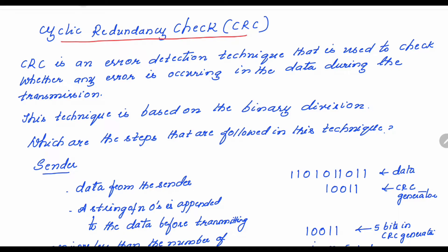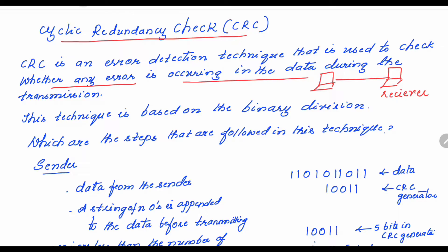This technique, popularly known as CRC in short, is used to check whether any error is occurring in the data during transmission. Normally, a sender sends the data to the receiver. During transmission, the data may get corrupted. The receiver has to check whether the data received is the correct one or the corrupted one. That is what today's topic is about — using a technique called cyclic redundancy check.